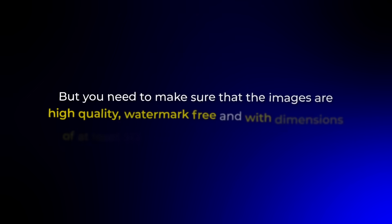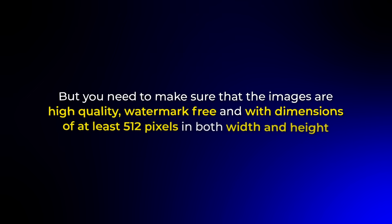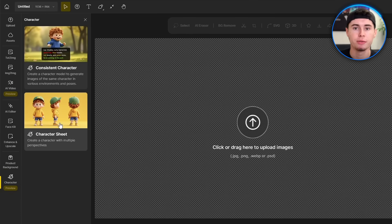The Consistent Character tool requires you to provide training images that have a specific character with uniform characteristics. You need to make sure that the images are high quality, watermark-free, and with dimensions of at least 512 pixels in both width and height. You can use between 1 to 30 images for training. If you've already created your character, you're good to go. But we are going to start with the Character Sheet tool, because this is where we'll set the foundation for training your character model.